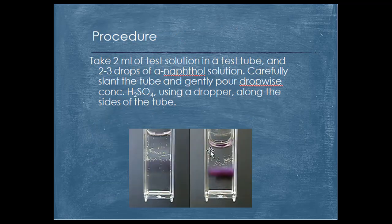This is how the result gives a positive test. You can see a purple color ring formed at the junction of the two liquids, which shows the presence of carbohydrate in the sample.